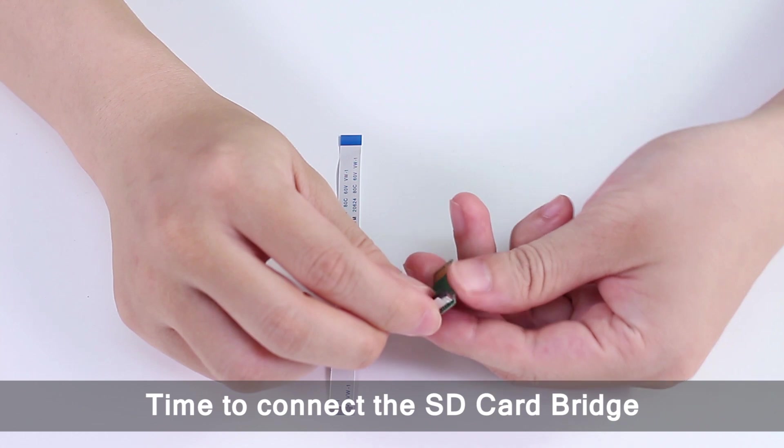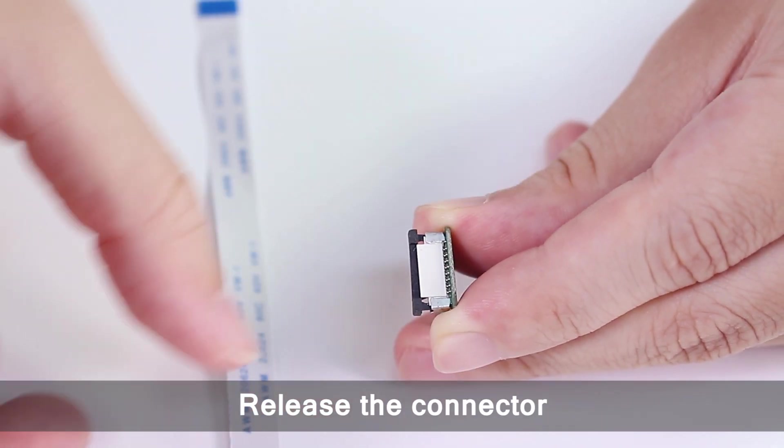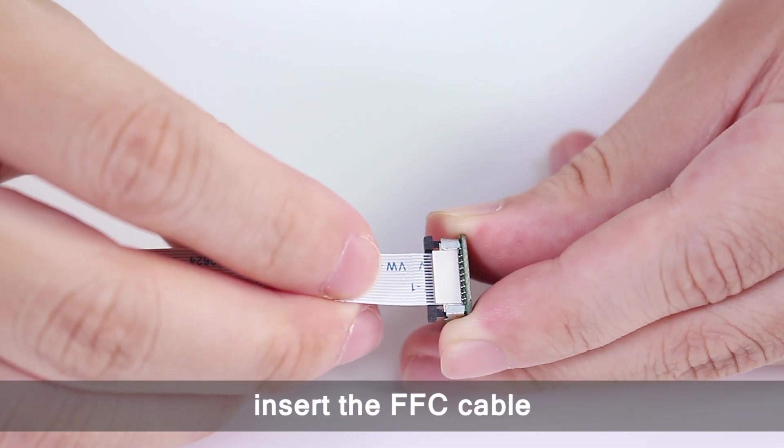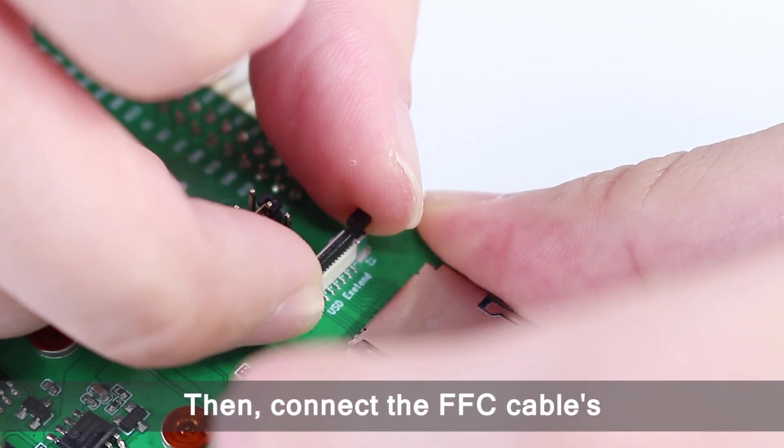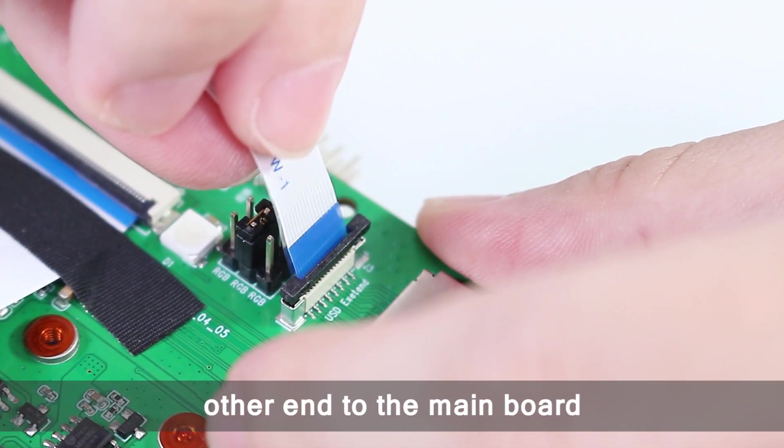Time to connect the SD card bridge. Release the connector, insert the FFC cable, and snap it down to lock. Then, connect the FFC cable's other end to the main board.